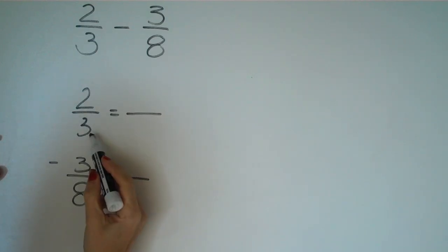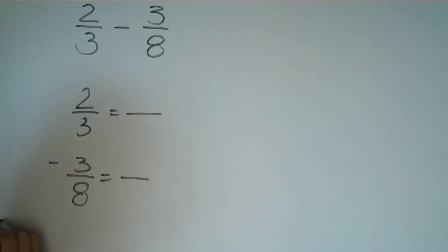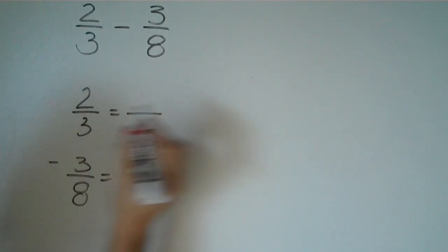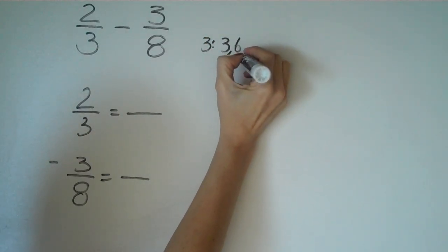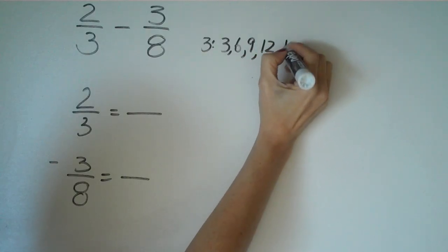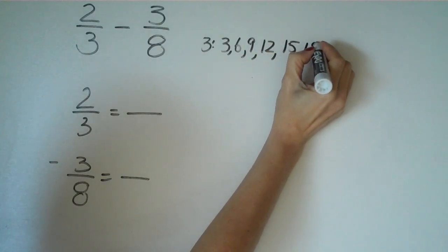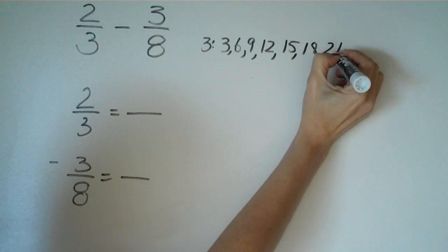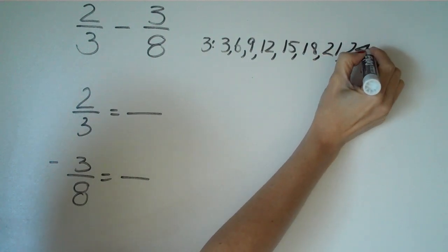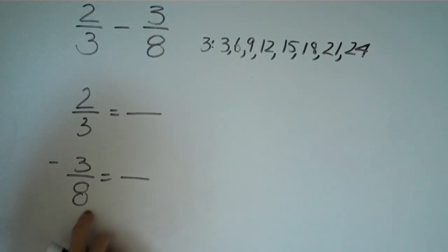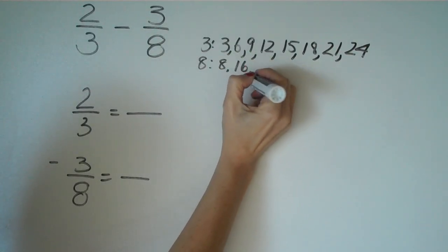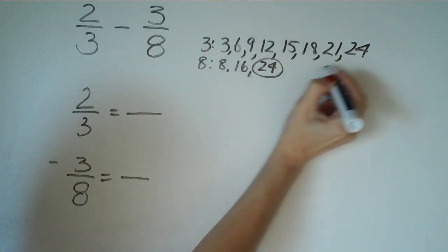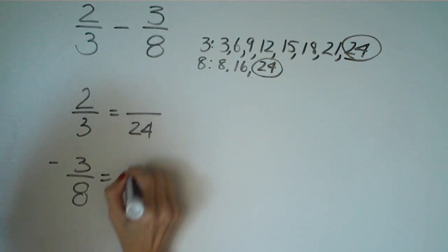And if we look at 3 and we look at 8, we know that 3, the multiples of 3, if we were to write them out, the multiples of 3 would be 3, 6, 9, 12, 15, 18, 21, and there it is, 24. So what about the multiples of 8? 8 would be 8, 16, and 24. So we see the common denominator here is 24.